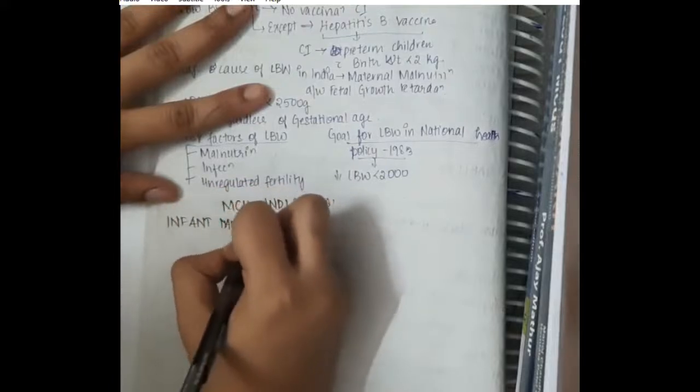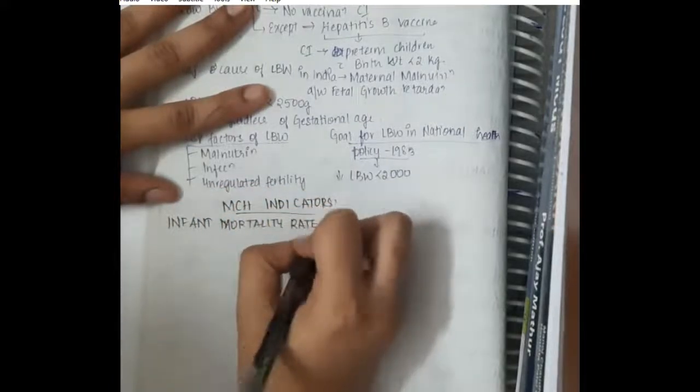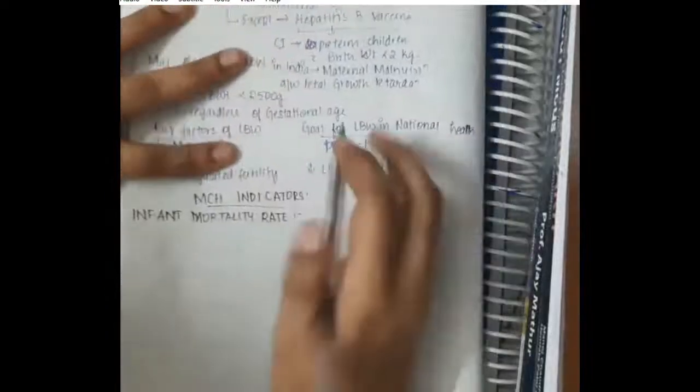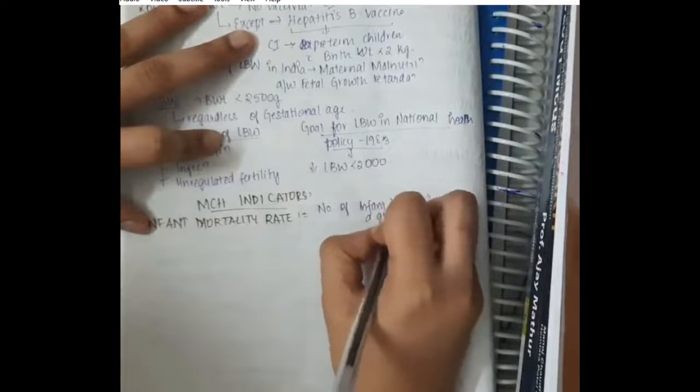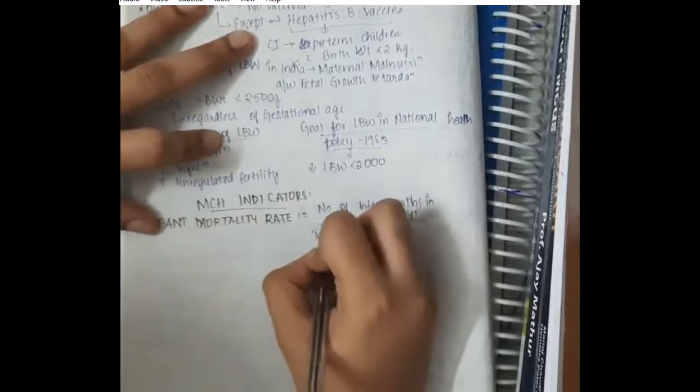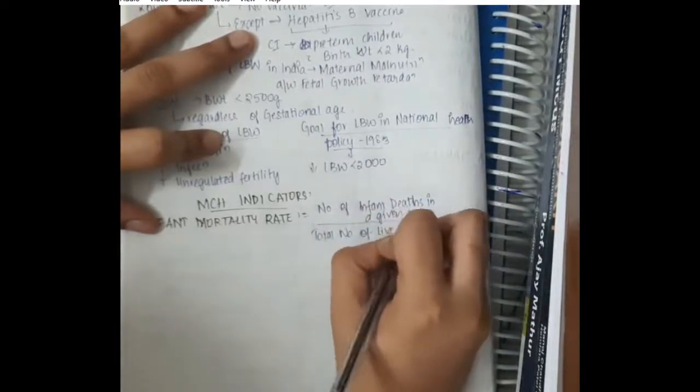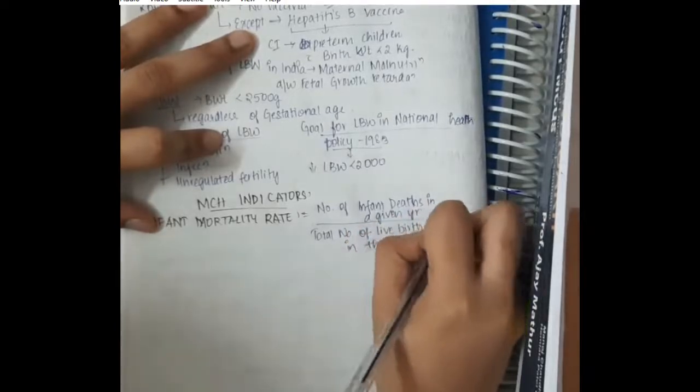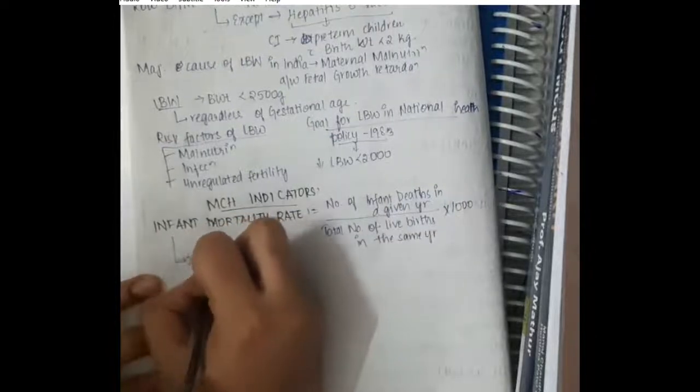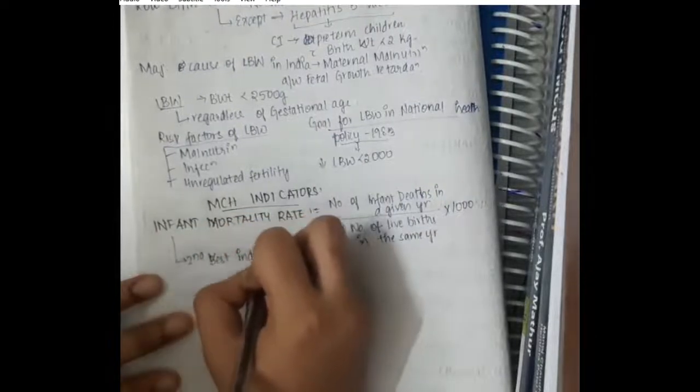In maternal and child health indicators, first we have infant mortality rate. Infant mortality rate includes number of infant deaths in a given year by total number of live births in the same year into 100. That means among all the children who were born, the number of infants who were dead were taken into account in infant mortality rate.